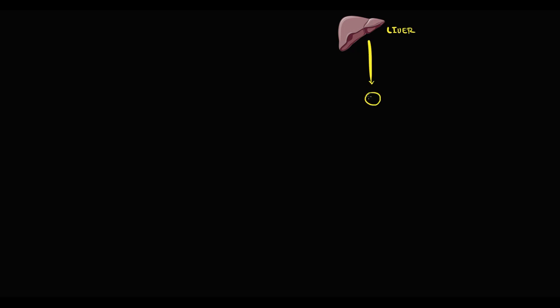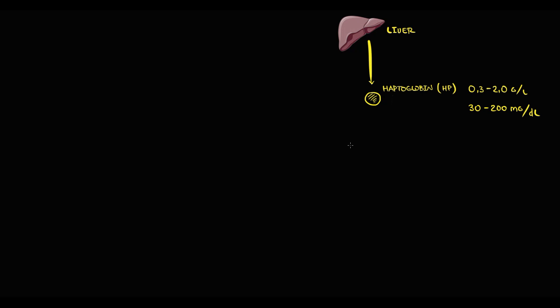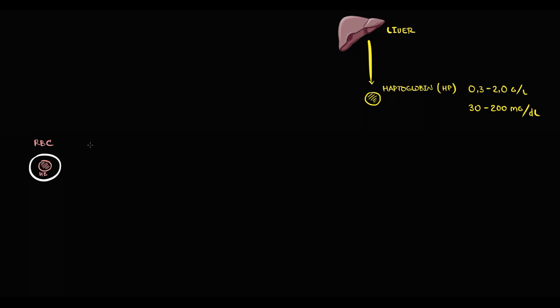The liver produces a specific protein called haptoglobin. Haptoglobin enters the bloodstream and the normal concentration of haptoglobin in the bloodstream is 0.3 to 2.0 g per litre, or 30 to 200 mg per deciliter. In the blood we have red blood cells, and inside them they have hemoglobin. In normal conditions, red blood cells and haptoglobin do not interact with each other — they circulate through the bloodstream separately.